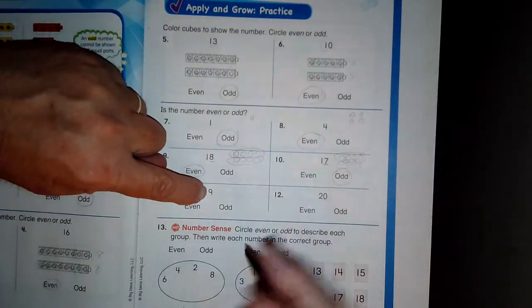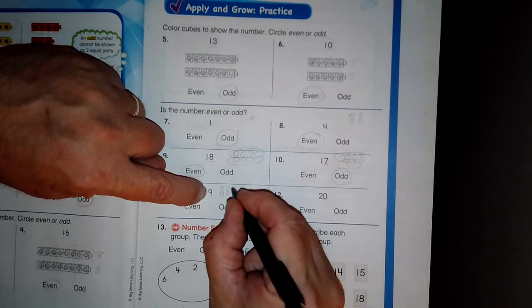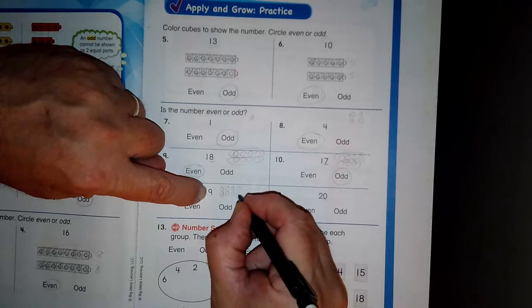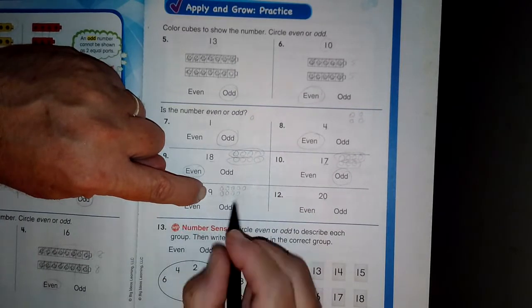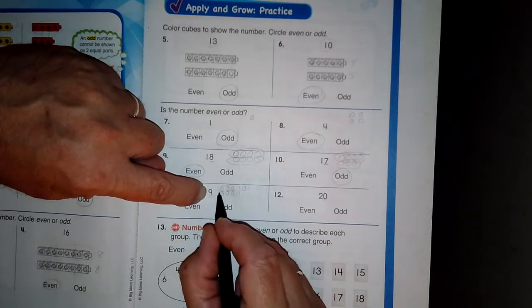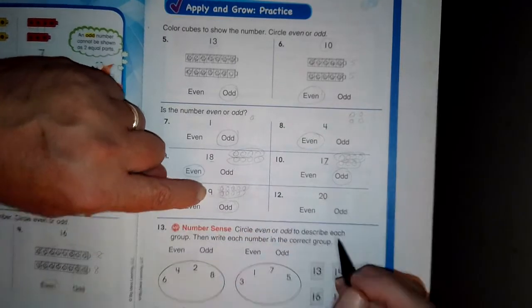Okay, here we go with nineteen. One, two, three, four, five, six, seven, eight, nine. Same thing. I'm only looking at the last number. There's five on the top and four on the bottom. That is an odd number.